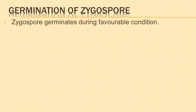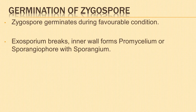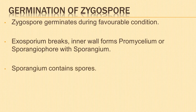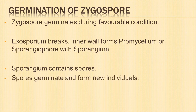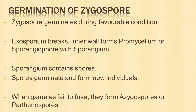Next is germination of the zygospore. The zygospore germinates during favourable conditions. The outer wall or exosporium breaks, and the inner wall grows out into a tube called the promycelium or sporangiophore, with a spherical sporangium at its tip. The sporangium contains numerous small spores, which germinate and give rise to new individuals. Sometimes the gametes fail to fuse and develop parthenogenetically to form thick-walled spores called azygospores or parthenospores.